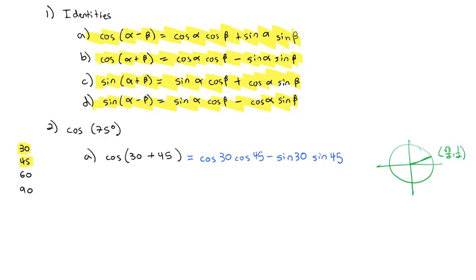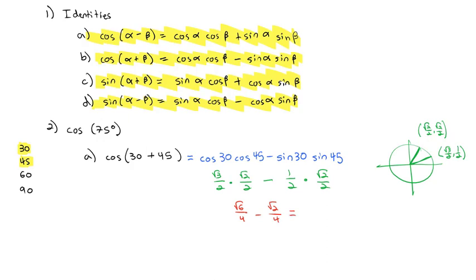We know each of these values on the unit circle. A 30-degree angle has x-coordinate root 3 over 2 and y-coordinate 1 half. 45 degrees is root 2 over 2, root 2 over 2. So cosine of 30 — the x-coordinate — is root 3 over 2, times cosine of 45, root 2 over 2, minus sine of 30, which is 1 half, times sine of 45, root 2 over 2. Simplifying, that gives root 6 over 4 minus root 2 over 4, which equals the square root of 6 minus the square root of 2, all over 4. Now we're able to find the exact value of cosine of 75 degrees.